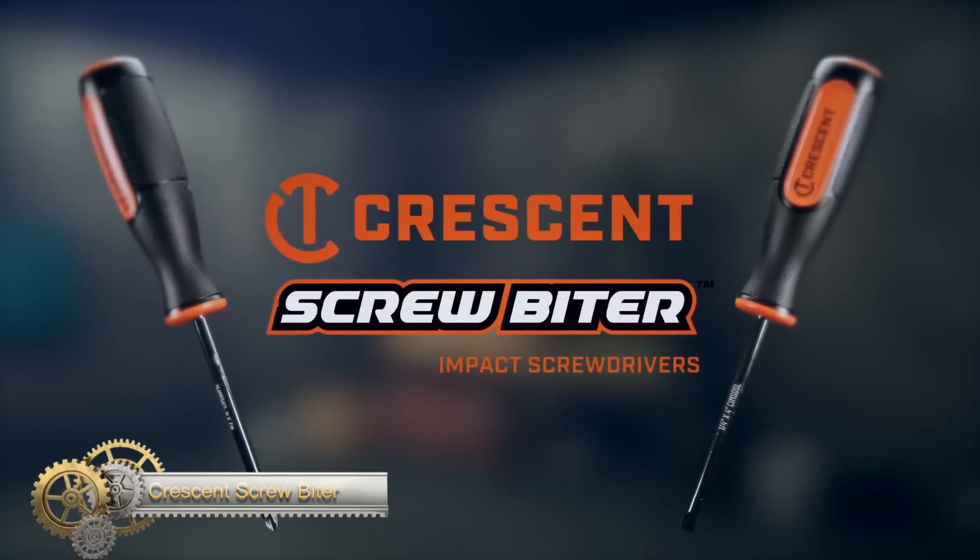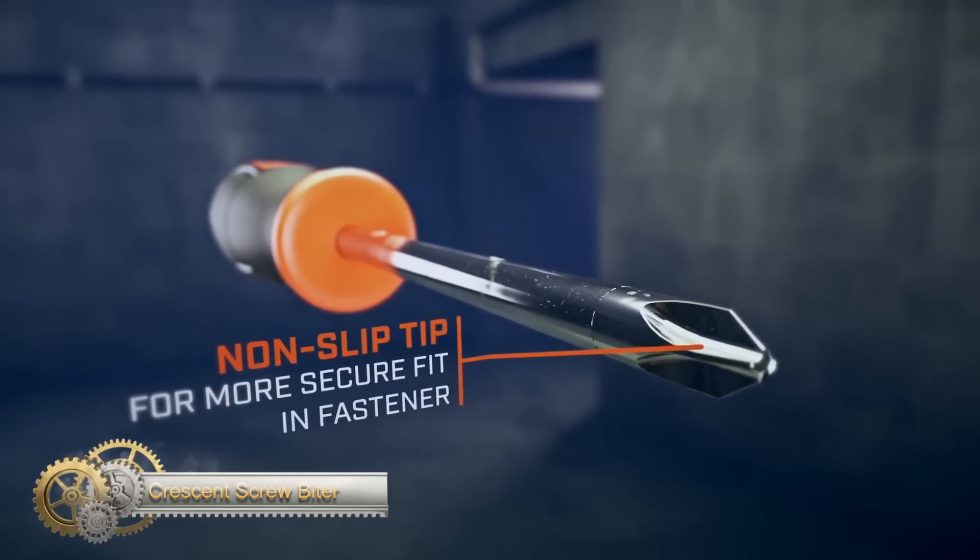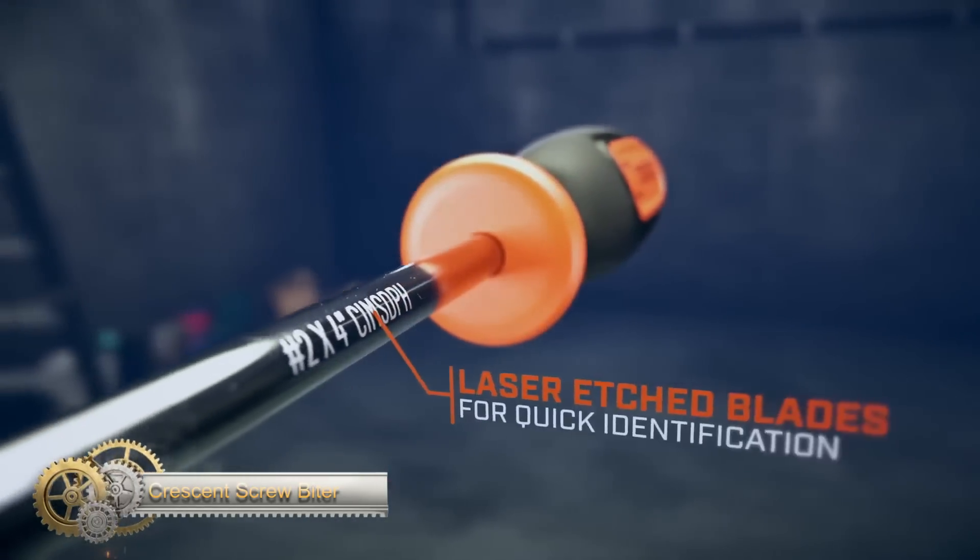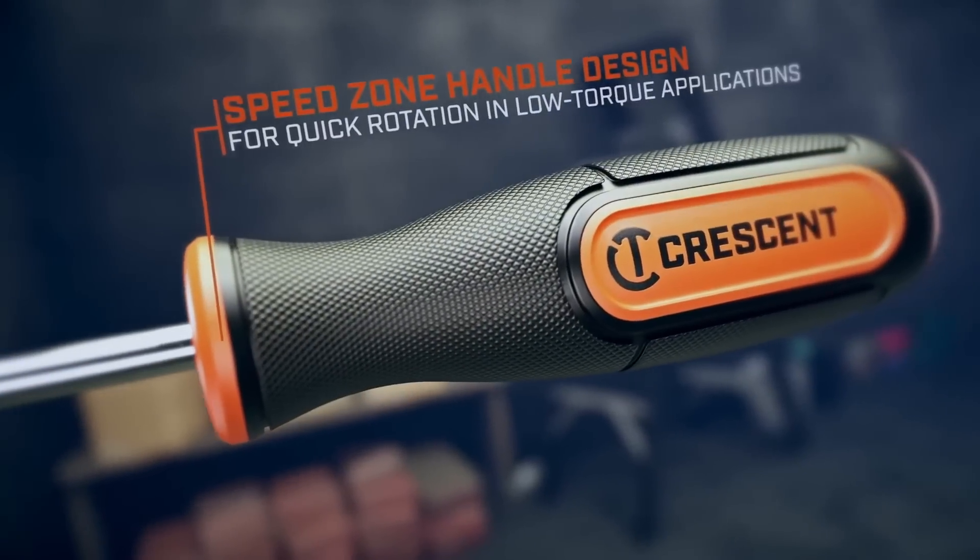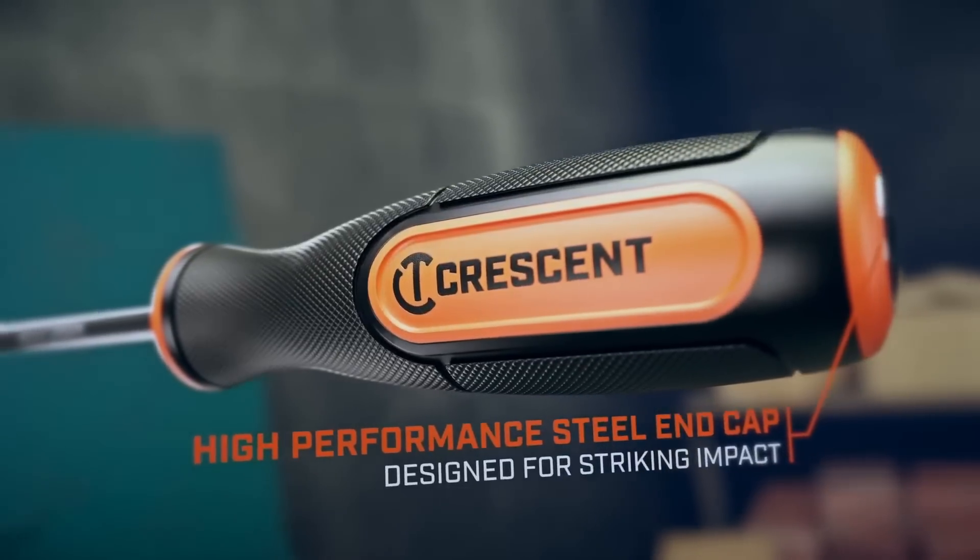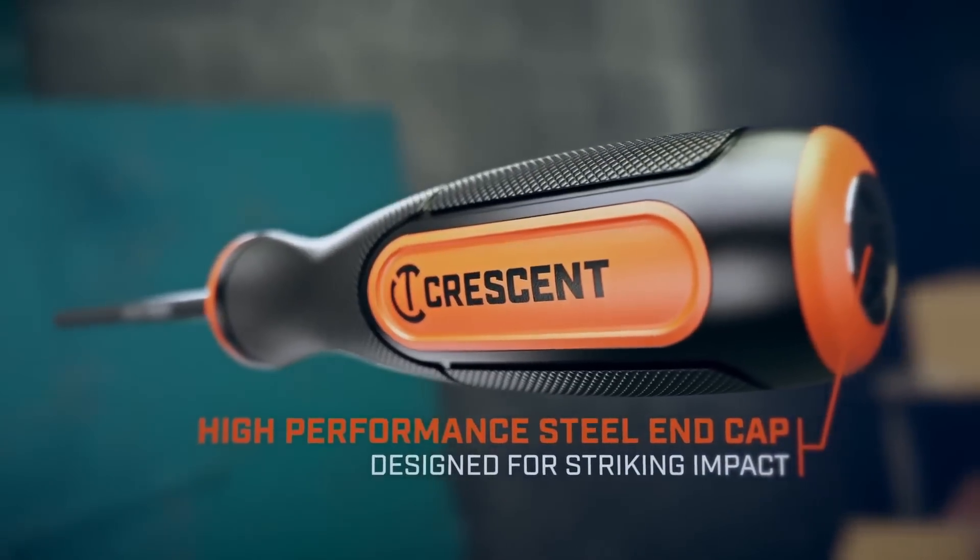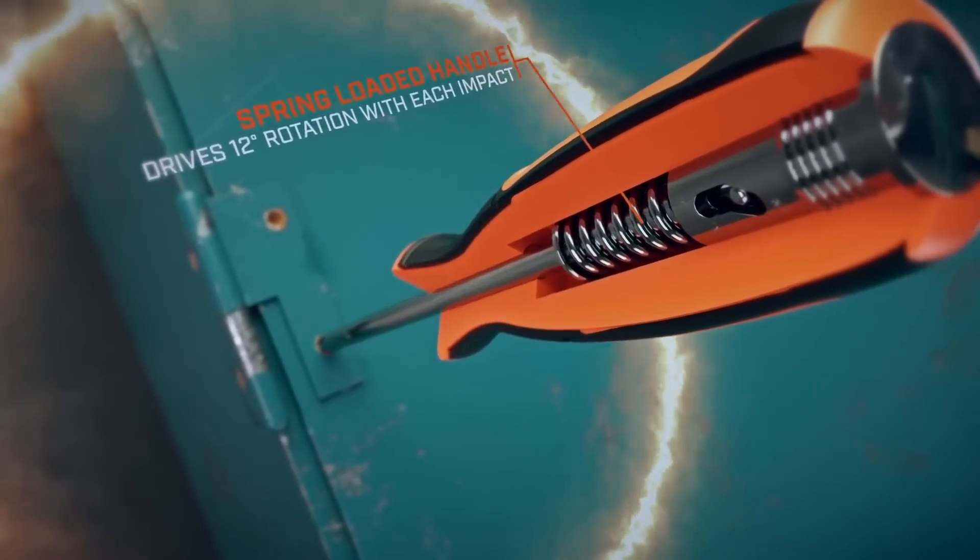Screw biter impact screwdrivers are the ultimate tool for removing difficult screws. Combining the convenience of a standard screwdriver with the power of an impact driver, Screw biter easily removes rusted or stripped screws. The high-performance steel handle end cap transfers impact shock to an internal mechanism, rotating the heat-treated alloy steel shaft 12 degrees when struck.